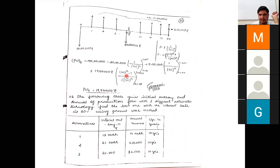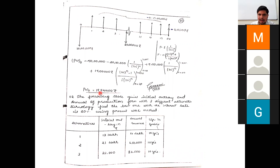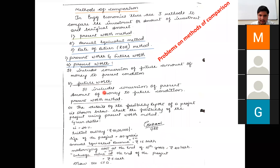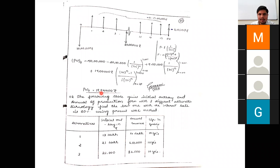After substituting all values in the formulas, the present worth value PW₀ = Rs. 19,94,400. This is the present worth value for this project.